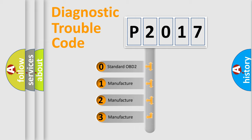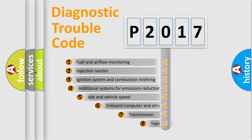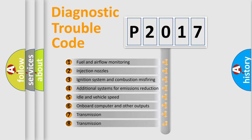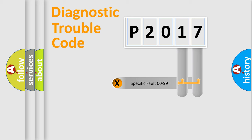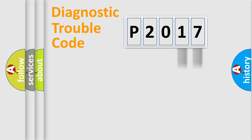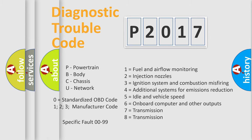If the second character is expressed as zero, it is a standardized error. In the case of numbers 1, 2, or 3, it is a more specific expression of a car manufacturer-specific error. The third character specifies a subset of errors. This division is valid only for the standardized DTC code, and only the last two characters define the specific fault of the group. This is valid only when the second character is zero.